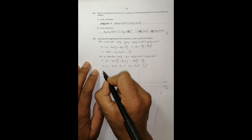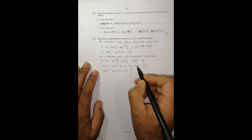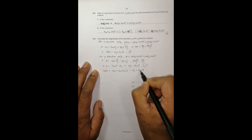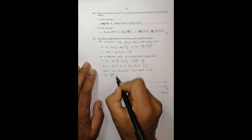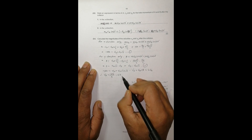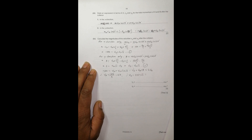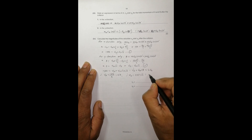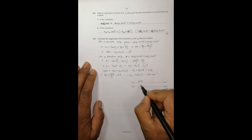Substituting Equation 2 into Equation 1: 1000 = vₐ + (vₐ·√3)·√3 = vₐ + 3vₐ = 4vₐ. So vₐ = 1000/4 = 250 m/s. Then v_b = 250·√3 ≈ 433 m/s. Therefore vₐ = 250 m/s and v_b = 433 m/s. This is the complete answer to the question.